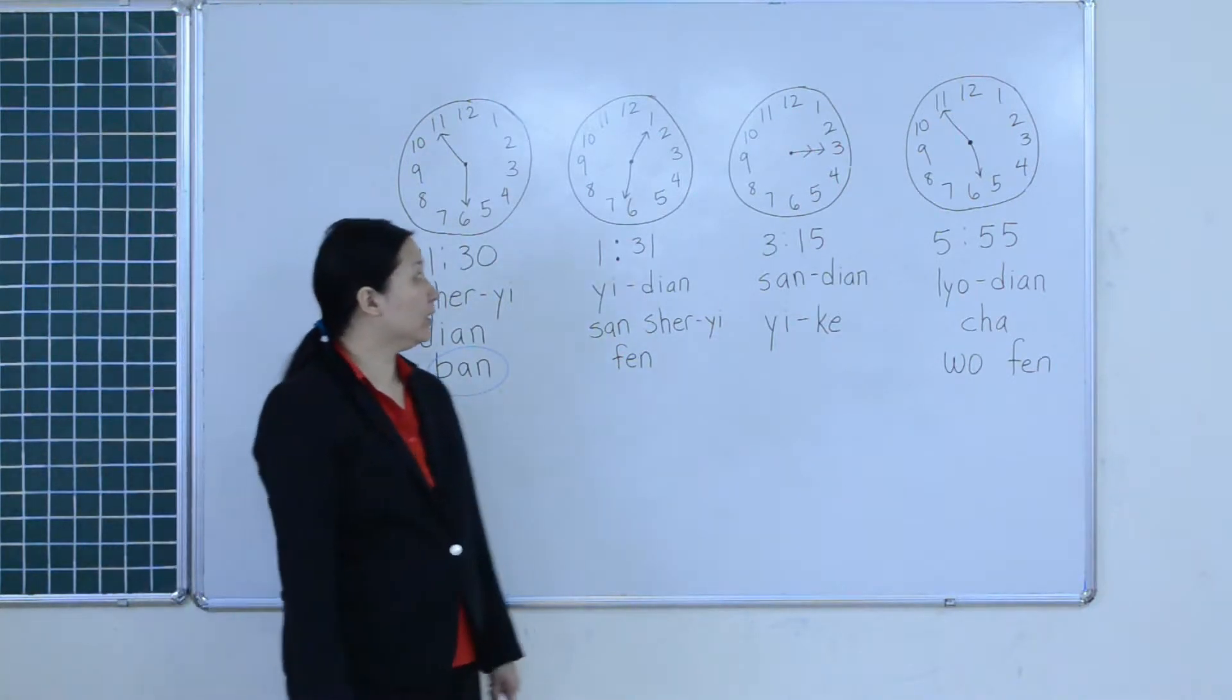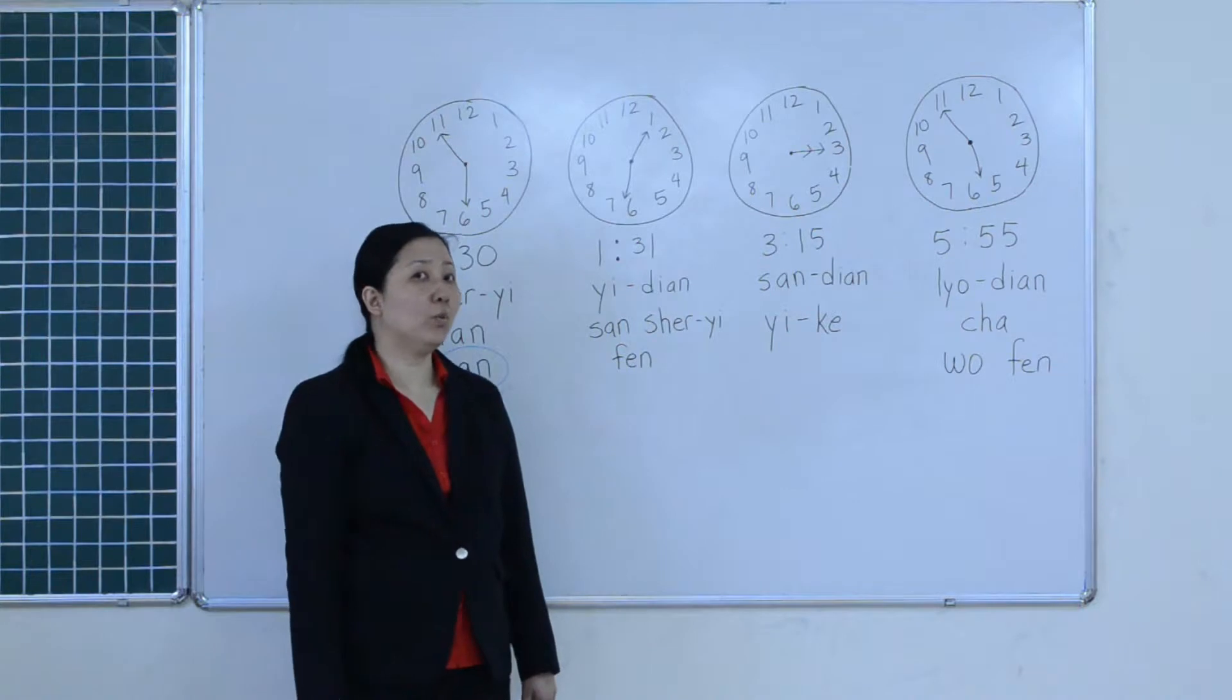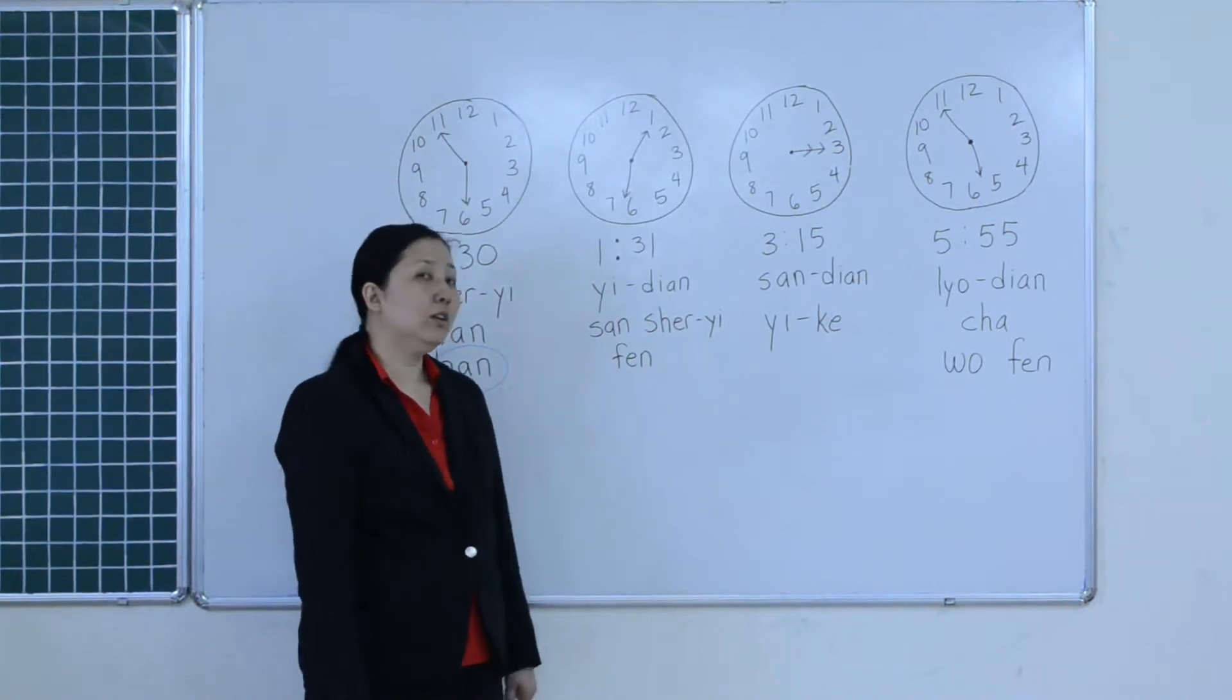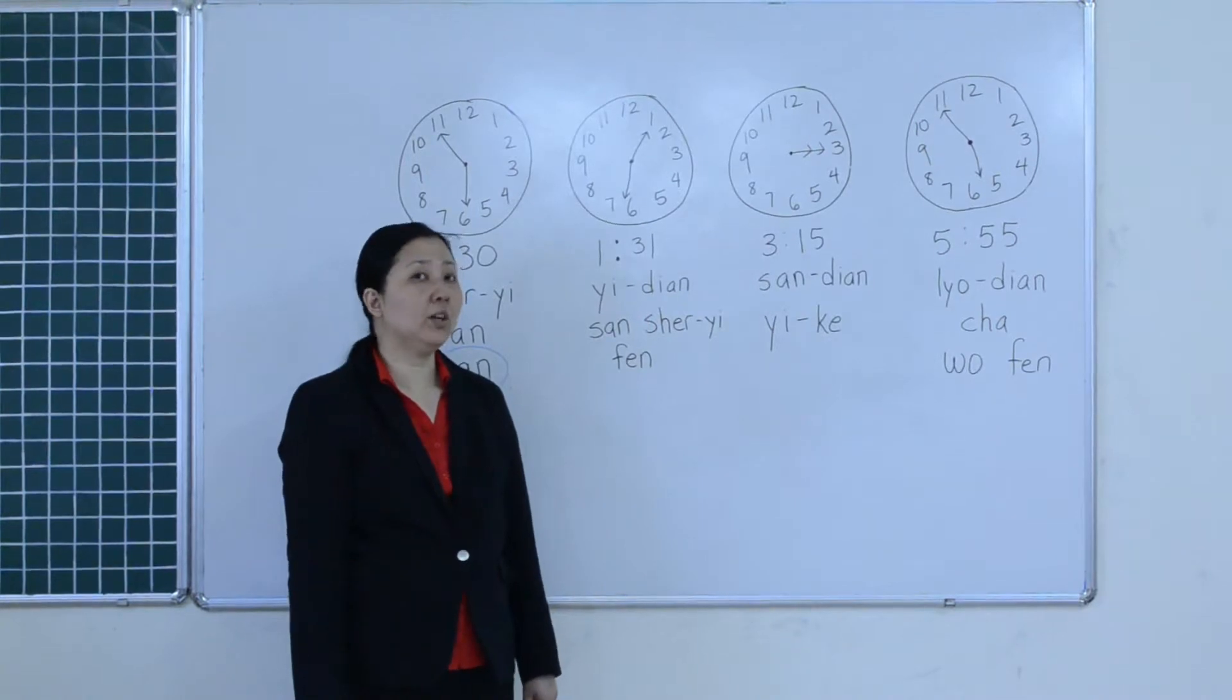Right here, this is 1:31. How do you say that? 分 refers to the minutes.